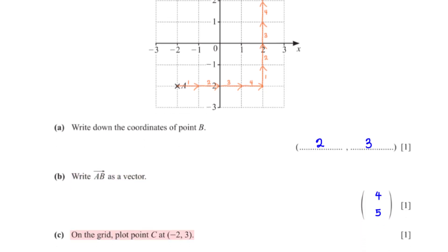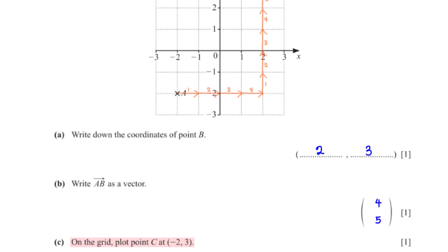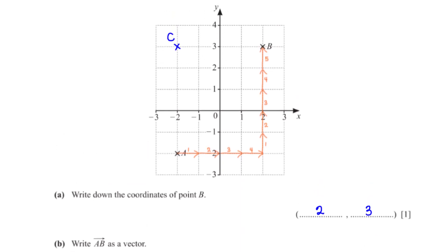On the grid, plot the point C at negative 2, 3. When we map negative 2 from the x-axis and 3 from the y-axis, we are able to pin point C.